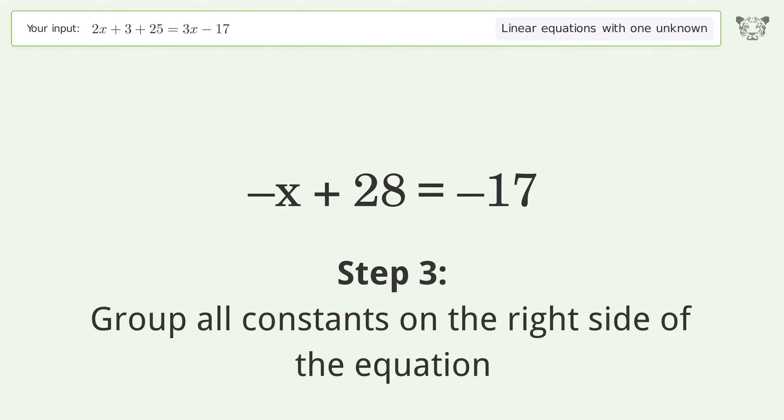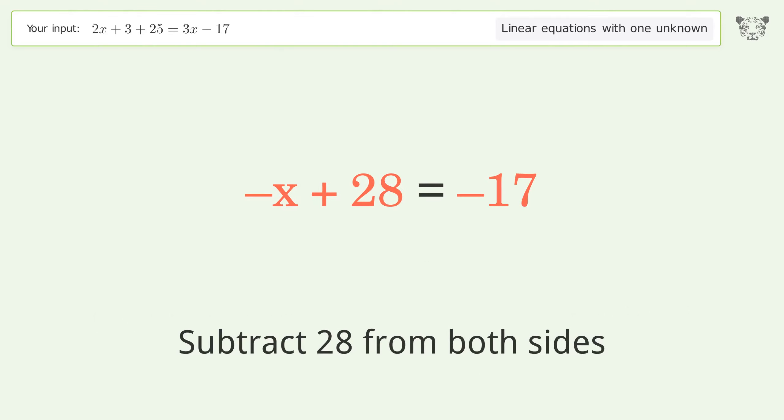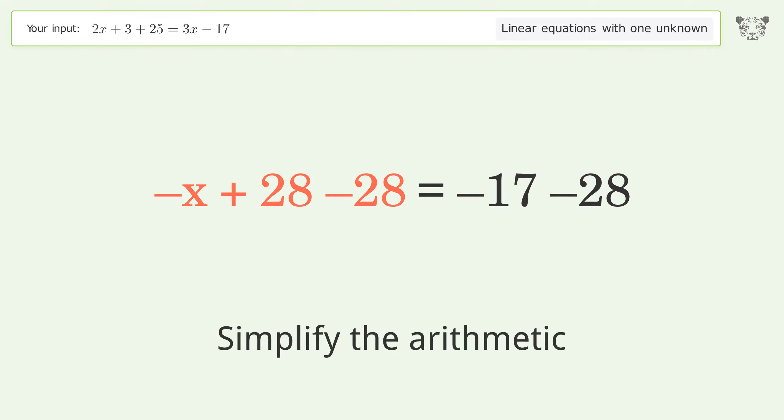Group all constants on the right side of the equation. Subtract 28 from both sides. Simplify the arithmetic.